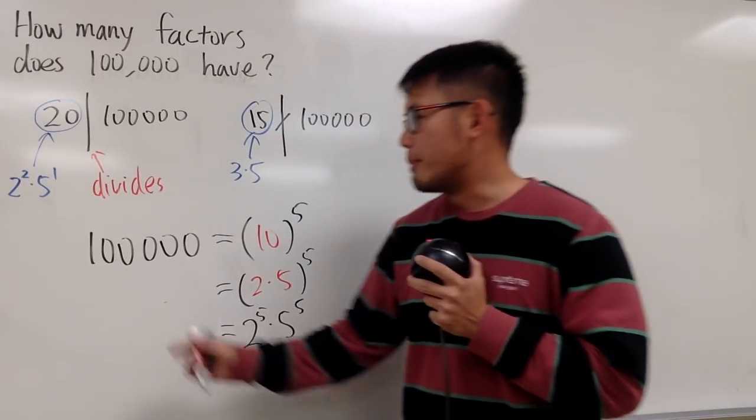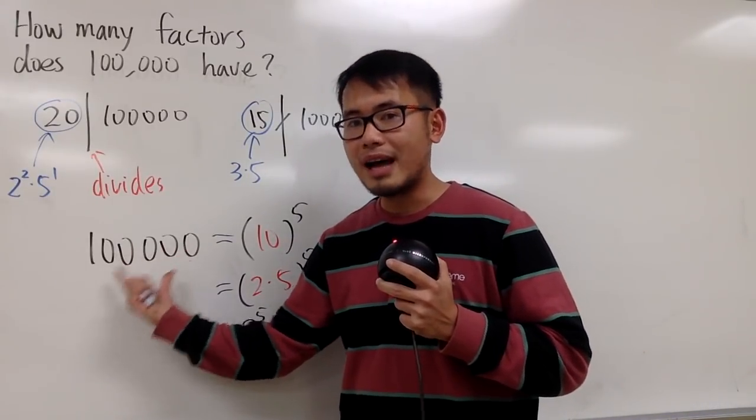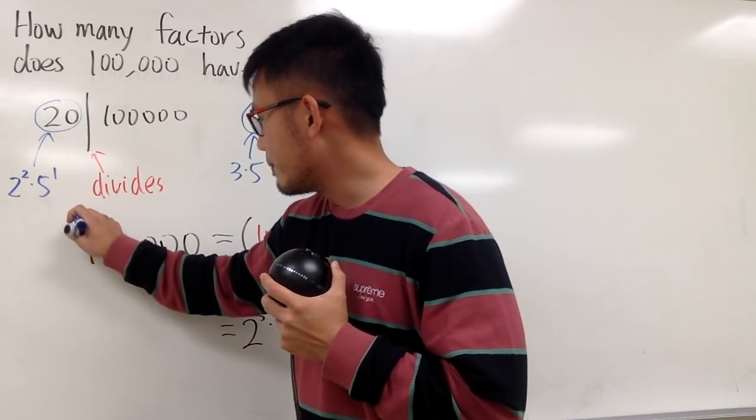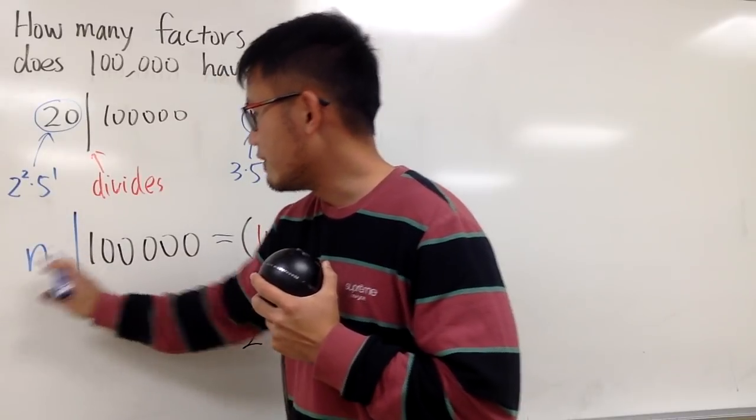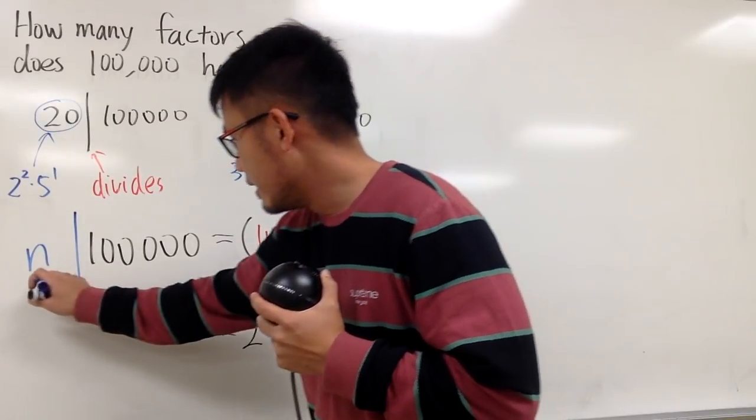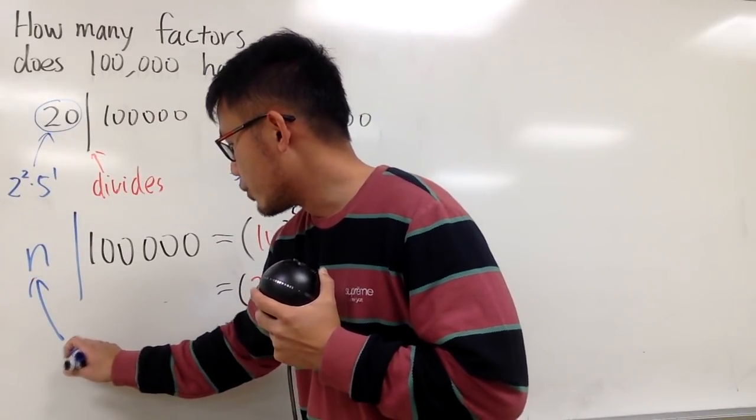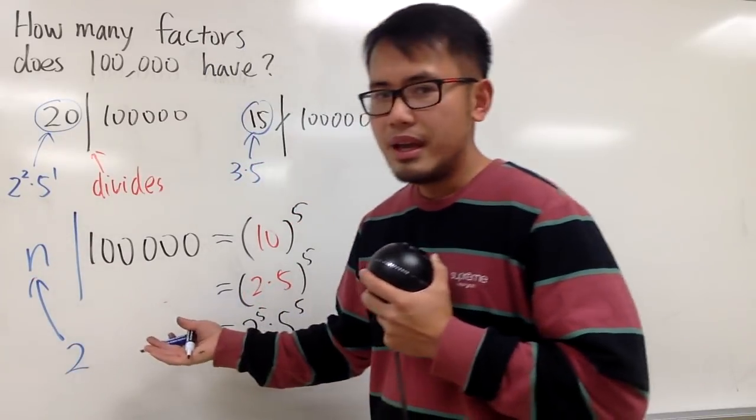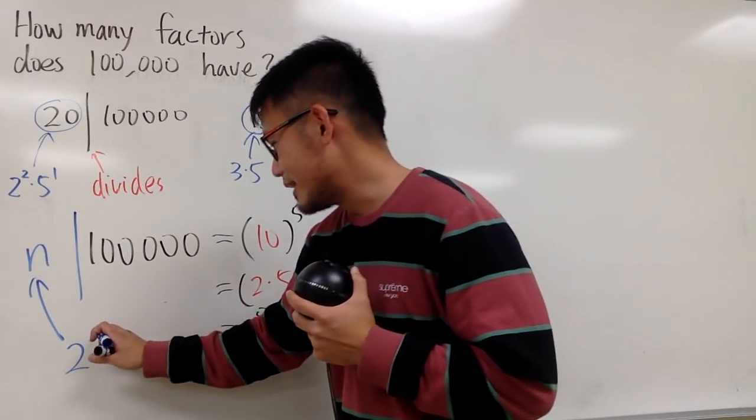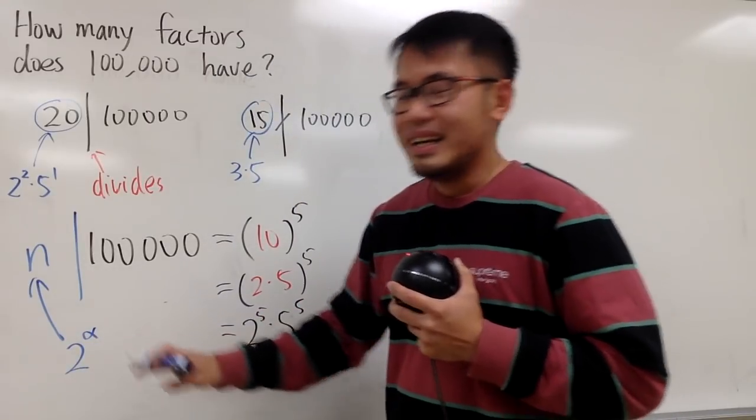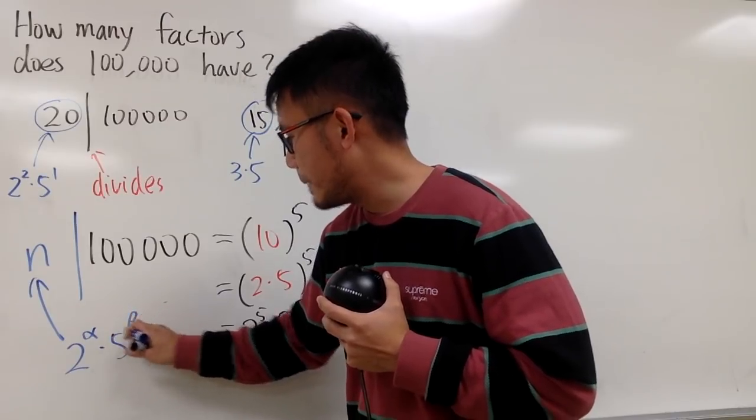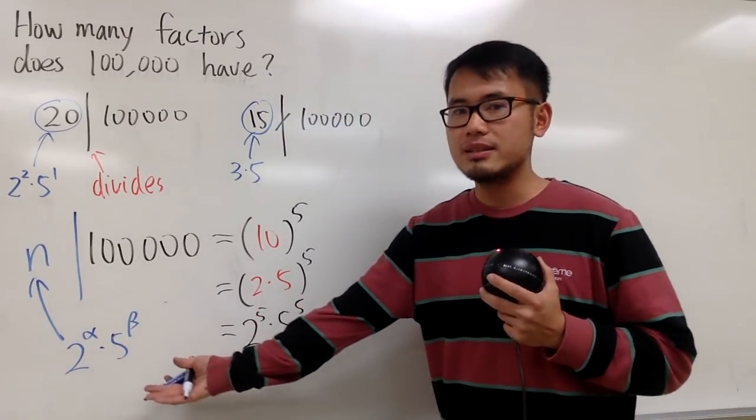In order for a number to be a factor of 100,000, this factor right here, let me just say, if you have a number that divides into 100,000, this number n, it has to be in the form of 2 to some number. And usually, for the power, I don't want to use a or b. I want to use alpha and beta. n has to be in the form of 2 to the alpha times 5 to the beta. It has to be like this.